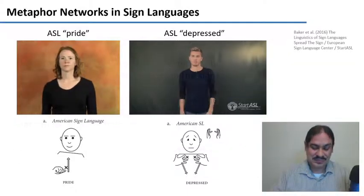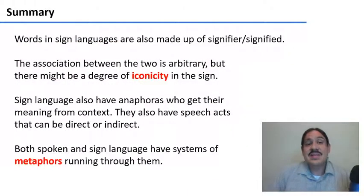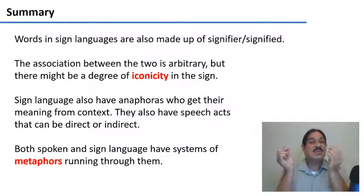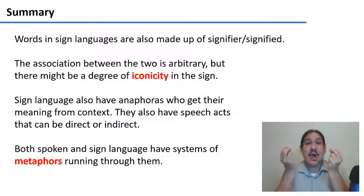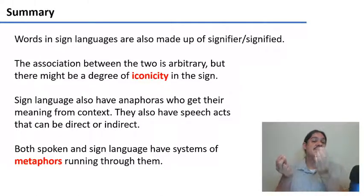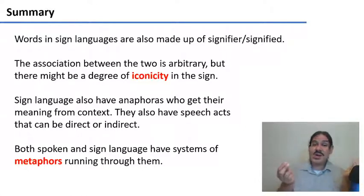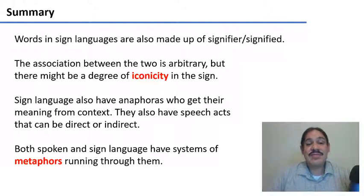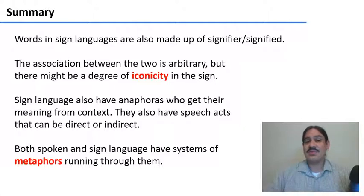In summary, words in sign languages are made up of signifiers and signified, and the relationship between these two is arbitrary, just as in spoken languages — though there may be some degree of iconicity, ranging from more iconic to less iconic signs. Sign languages also have anaphoras, speech acts that can be direct or indirect, and systems of metaphors running through them, just as spoken languages do.